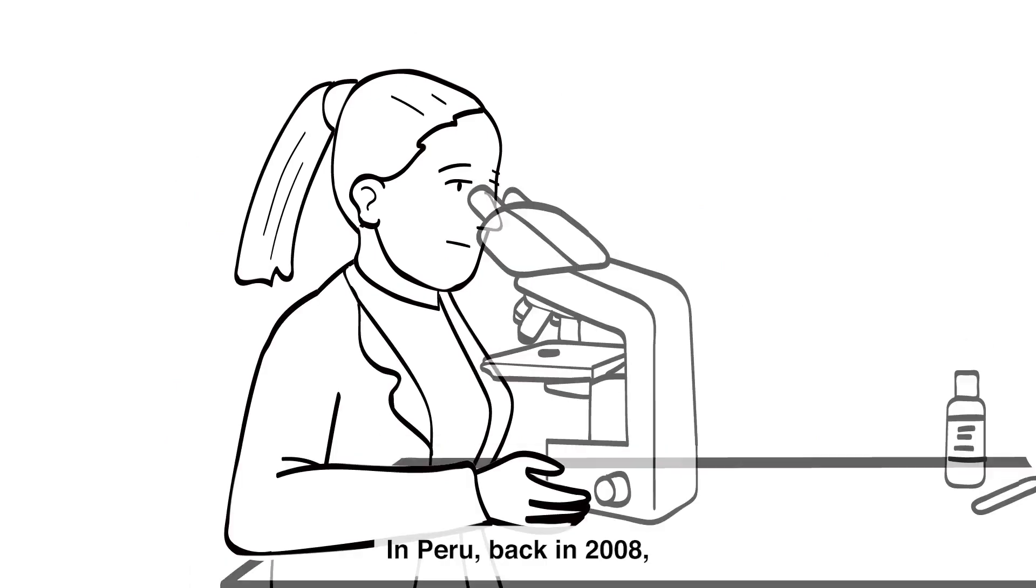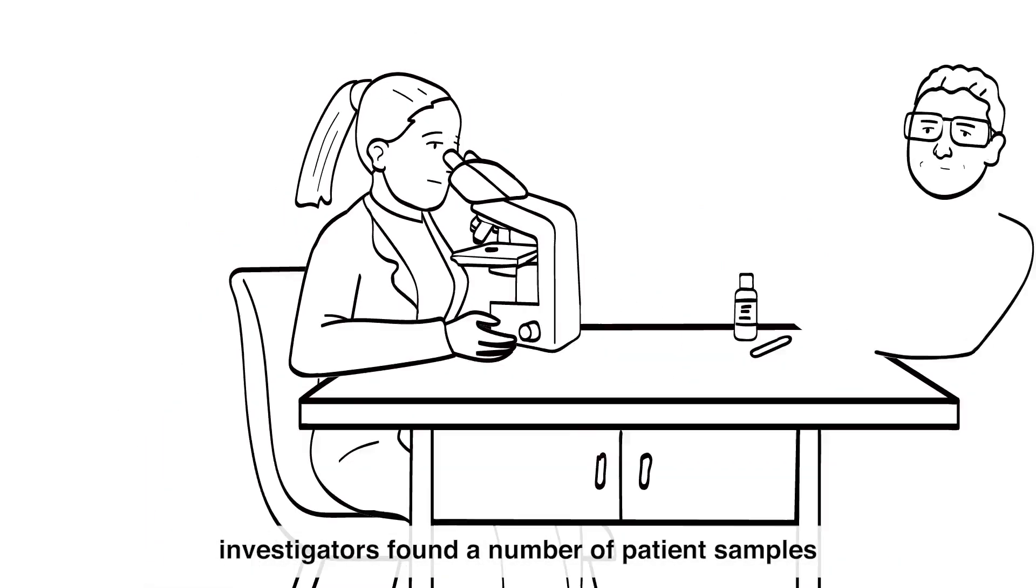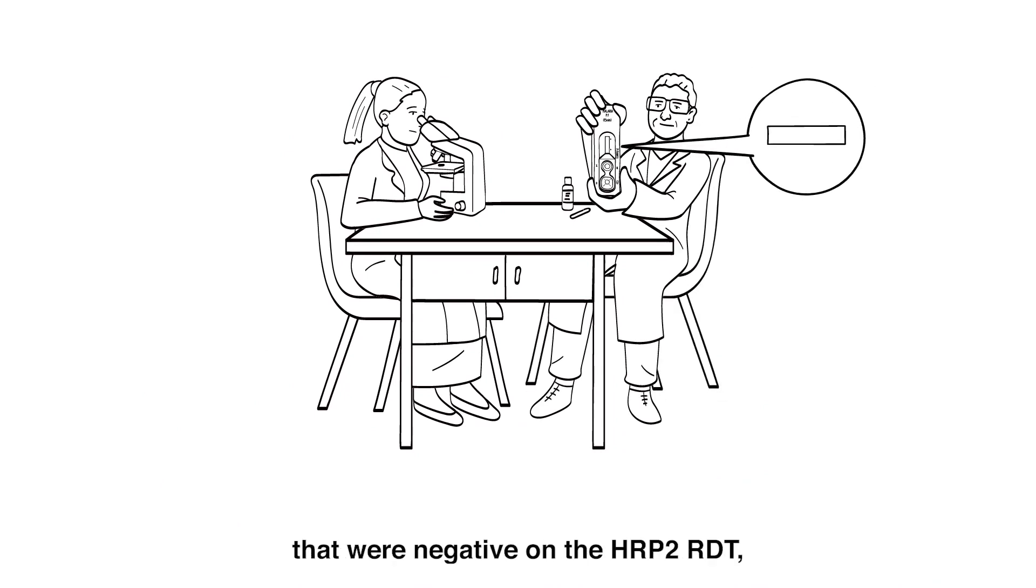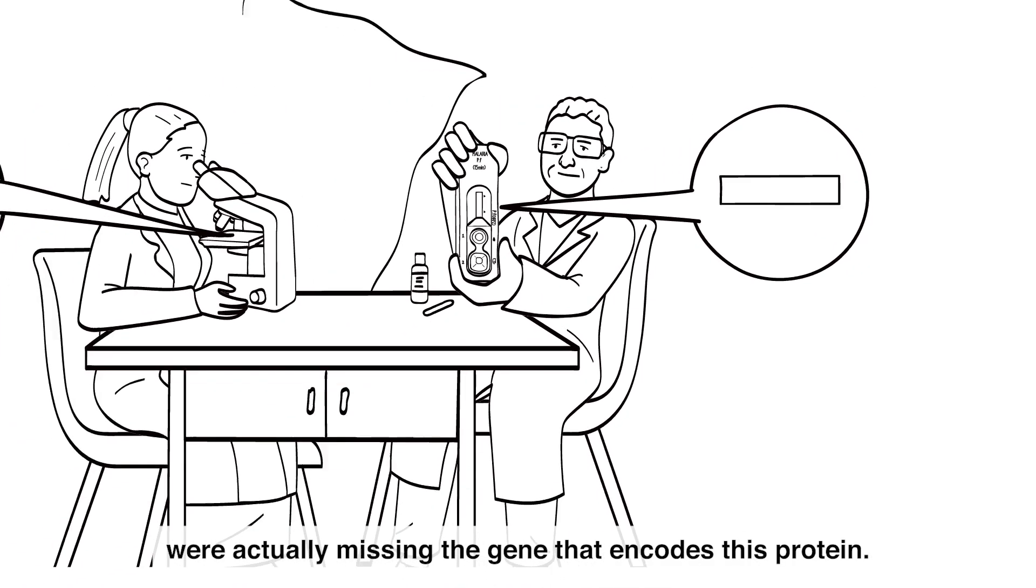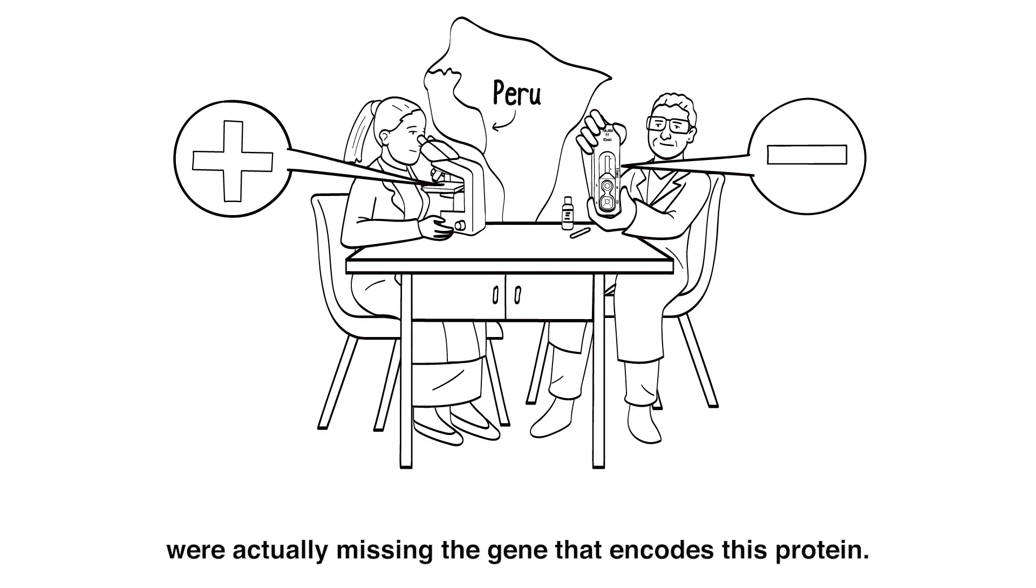In Peru, back in 2008, investigators found a number of patient samples that were negative on the HRP2 RDT but positive by blood film microscopy. The parasites that were returning the negative RDT results were actually missing the gene that encodes this protein.